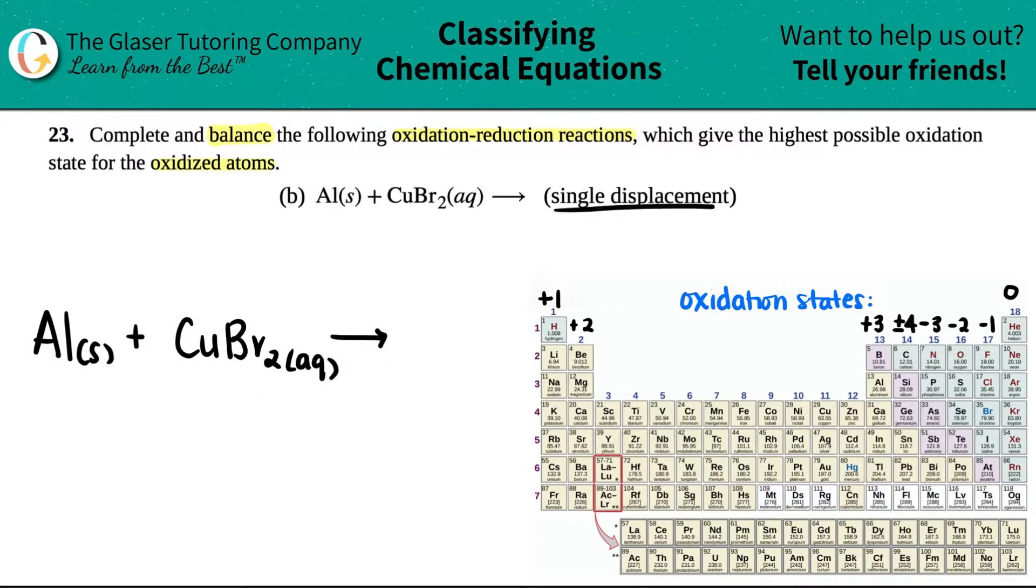Now they give us a hint here. This reaction is a single displacement reaction, which means that the atom that's all by itself is going to get a little jealous. The atom all by itself is always a jealous atom. The jealous atom wants to bump one of the elements out of the compound. But the thing is, who is aluminum going to bump out? Is it going to bump out copper or is it going to bump out the bromine?